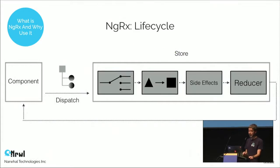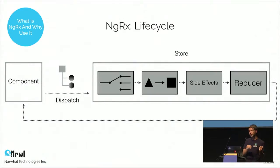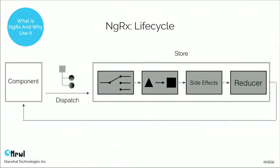Graphically, it looks like this: the component dispatches an action which goes to the store, where it's processed by effects classes — involving deciding how to process and transform an action. Then we execute all the necessary side effects, and finally the reducer creates a new state which the component receives. That's NGRX in a nutshell. Now let's look at each part of this diagram in greater detail. The first part is the action.